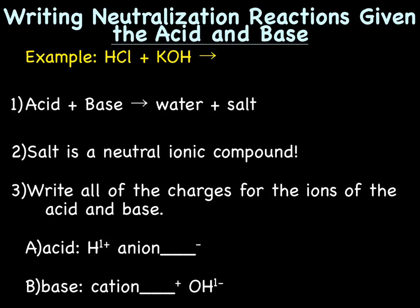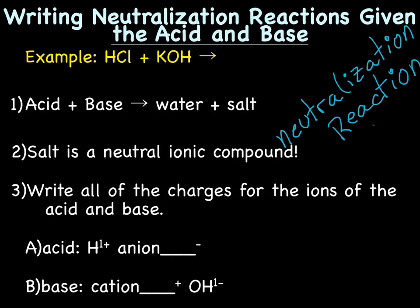Let's learn how to write neutralization reactions given the acid and the base. The example we'll be going through is HCl, or hydrochloric acid, plus KOH, or potassium hydroxide. The general formula for a neutralization reaction is: an acid plus a base produces water and salt. Remember that a salt is nothing other than a binary ionic compound. The first step is to write the charges for the ions of the acid and the base.